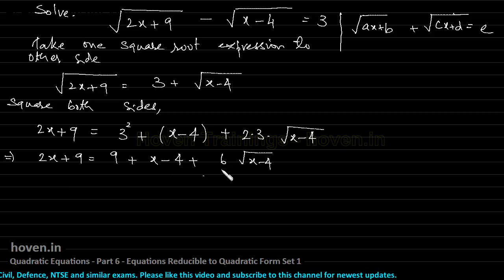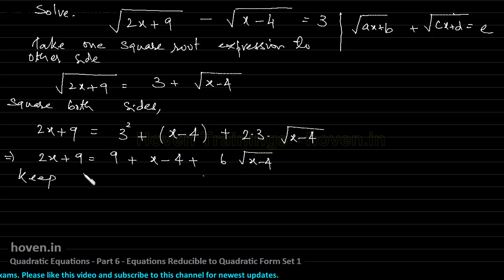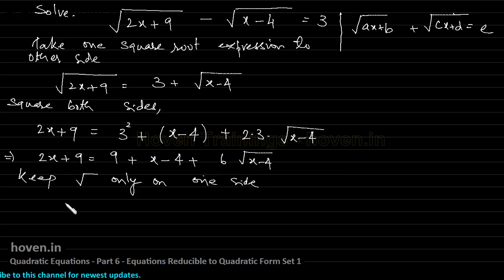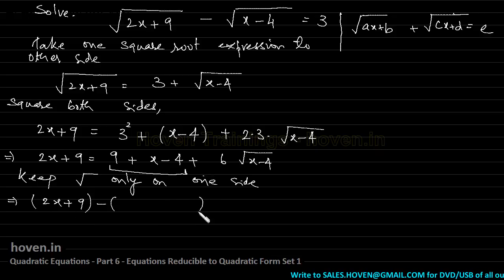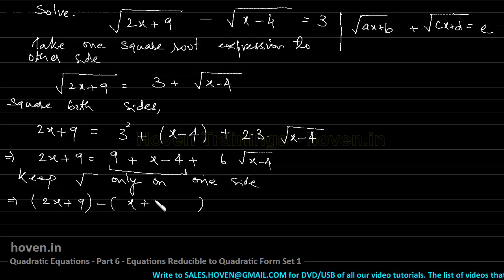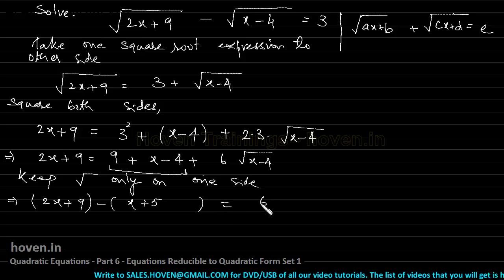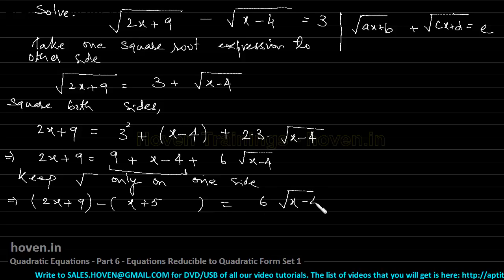Now keep the square root only on one side. Bring all other terms to the left: 2x + 9 − x − 9 + 4 = 6√(x − 4), which simplifies to x + 4 = 6√(x − 4).